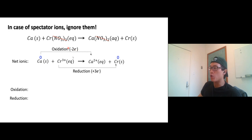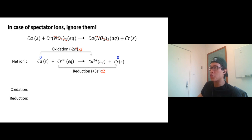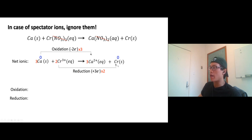Two electrons out, three electrons in — not equal. So I'm going to multiply by three on the two and by two on the three. You get six electrons out and six electrons in. Times three for the oxidation reaction: I'm going to need three calcium and get three calcium ion. Times two for the reduction reaction: I'm going to need two Cr³⁺ and get two chromium metal.